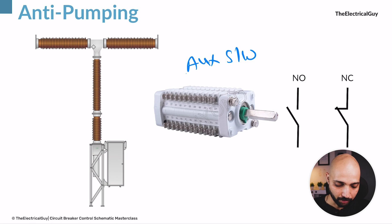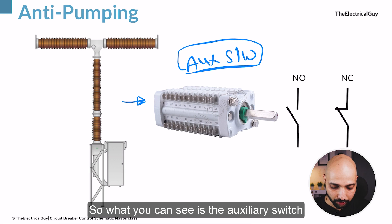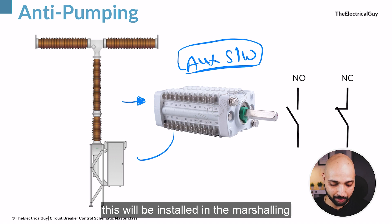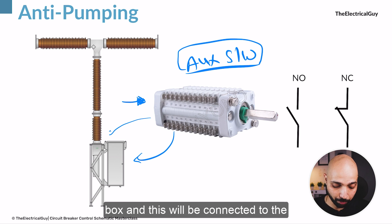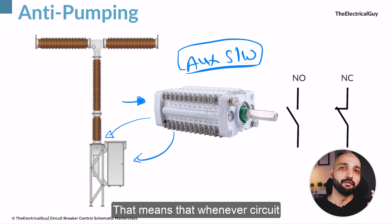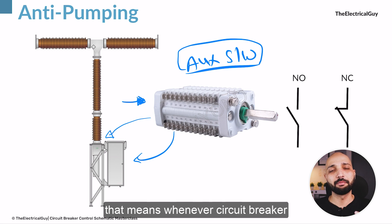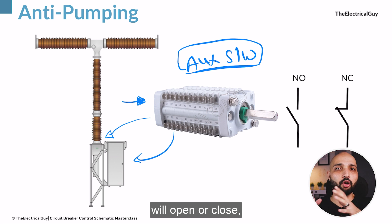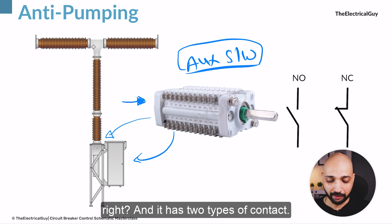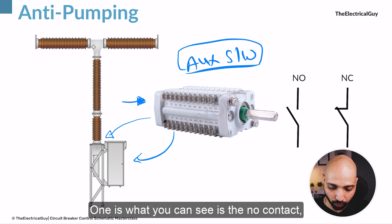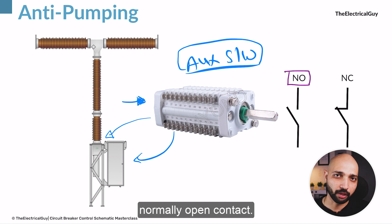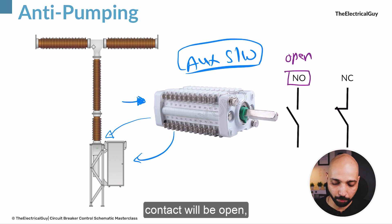The next equipment is the auxiliary switch of the circuit breaker. This auxiliary switch will be installed in the marshaling box and will be connected to the operating rod of the circuit breaker. That means whenever the circuit breaker operates — whenever it opens or closes — this switch will also operate with it. It has two types of contacts: the NO contact, which is the normally open contact whose default position is open.